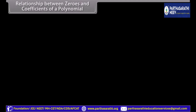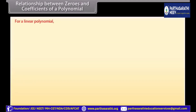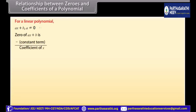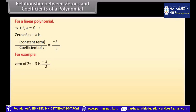Relationship between zeros and coefficients of a polynomial: For a linear polynomial ax plus b, where a is not equal to 0, the zero of ax plus b is minus constant term upon coefficient of x, which equals minus b upon a. For example, the zero of 2x plus 3 is minus 3 upon 2.